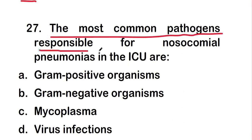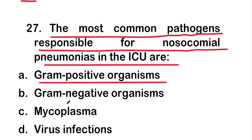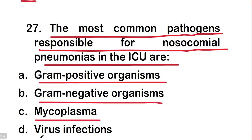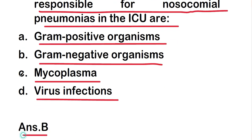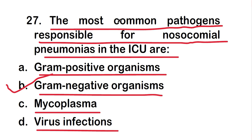Next question: the most common pathogens responsible for nosocomial pneumonia in the ICU are gram positive organisms, gram negative organisms, Mycoplasma, or viral infections. The right answer is option B — gram negative organisms are the most common pathogens responsible for nosocomial pneumonia in the ICU.